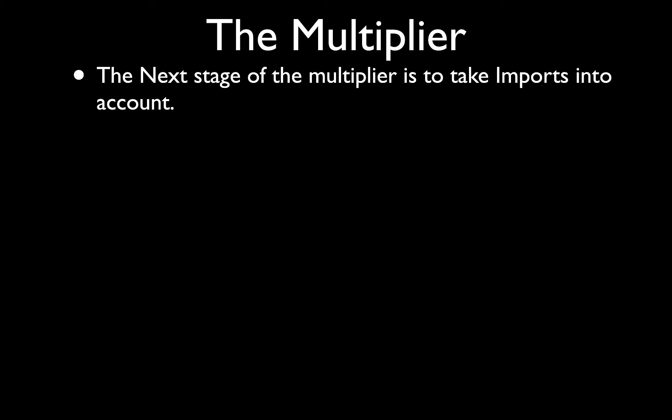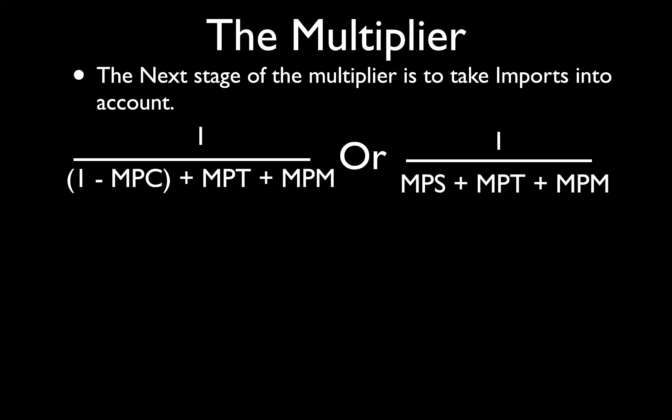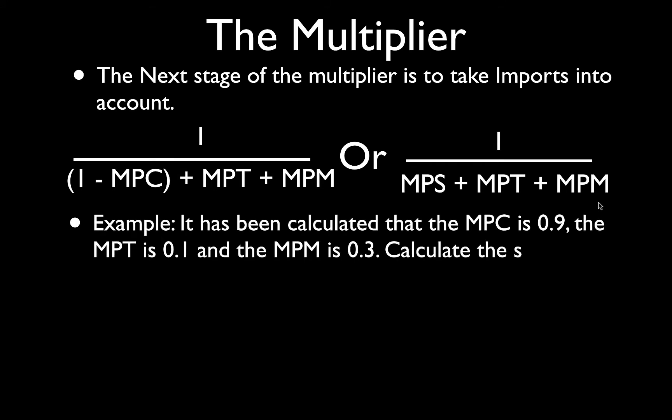Now the next stage of the multiplier is to take imports into account. There's two versions: one over 1 minus the MPC plus the MPT plus the MPM, or the MPS plus the MPT plus the MPM. It has been calculated that the MPC is 0.9, the marginal propensity to tax is 0.1, and the marginal propensity to import is 0.3.